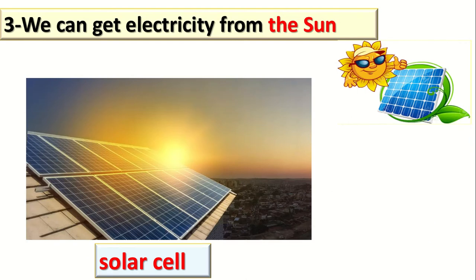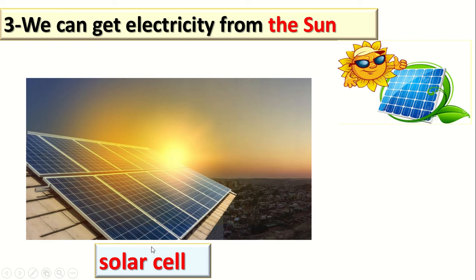Number 3: we can also get electricity from the sun. How? There is something called solar cells. Solar cells. The solar cells take the sunlight from the sun and store it as electricity. So the solar cells take the light from the sun and store it as electricity.